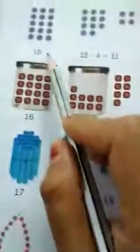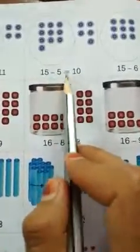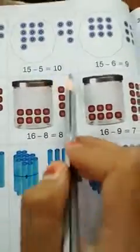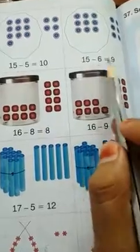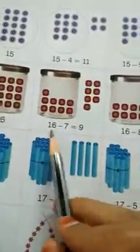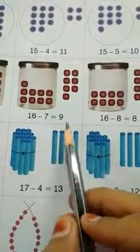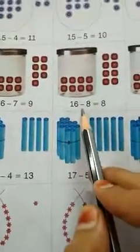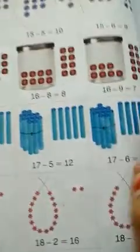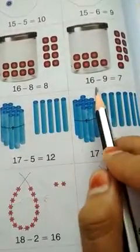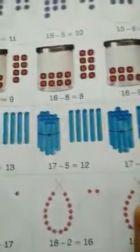Now here is 15. 15 minus 4 is equal to 11. 15 minus 5 is equal to 10. 15 minus 6 is equal to 9. Then here is 16. 16 minus 7 is equal to 9. 16 minus 8 is equal to 8. 16 minus 9 is equal to 7.